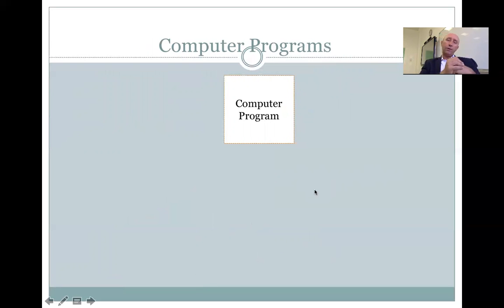Typically a computer program has two types. One of them is called native and the other one is called interpreted. What are the differences?